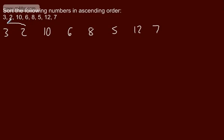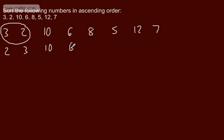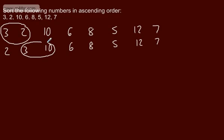The first two values we're going to compare are 3 and 2. We want this in ascending order. 2 is less than 3, so I'm going to rewrite my list: 2, 3, 10, 6, 8, 5, 12, and 7. I'm being very careful to ensure these are in line. Our next comparison is 3 and 10.